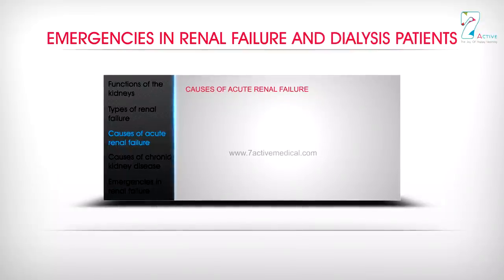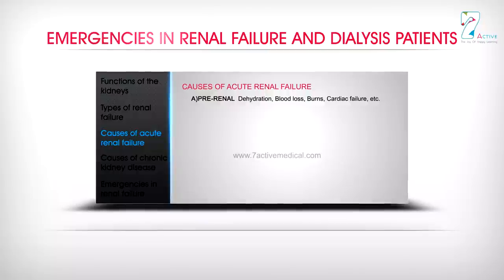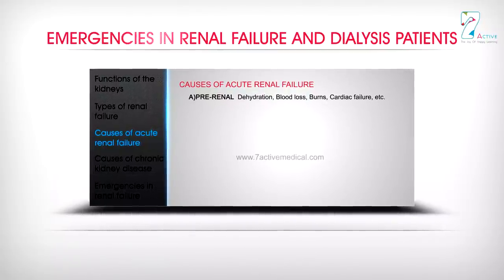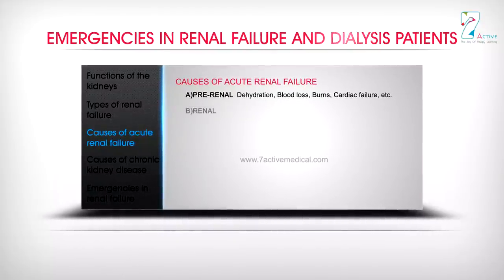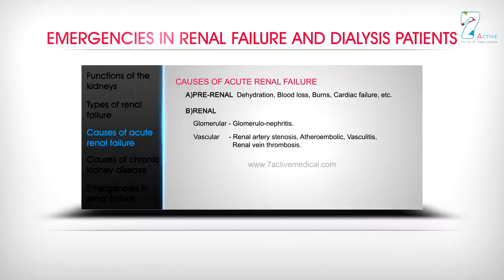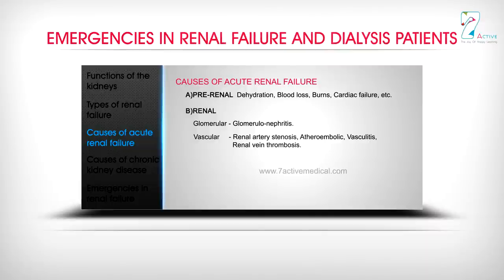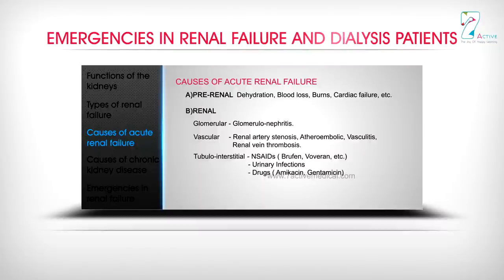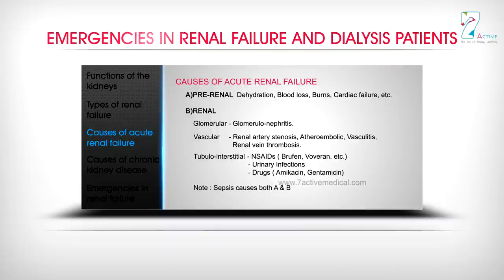Causes of acute renal failure: A) Pre-renal — dehydration, blood loss, burns, cardiac failure, etc. B) Renal — glomerular (glomerulonephritis); vascular (renal artery stenosis, atheroembolism, vasculitis, renal vein thrombosis); tubular/interstitial (NSAIDs such as Brufen, diclofenac, etc.; urinary infections; drugs such as amikacin, gentamicin). Note: sepsis causes both pre-renal and renal failure. C) Post-renal — renal stones, ureteric stones, bladder stones, urethral/ureteral strictures, enlarged prostate.